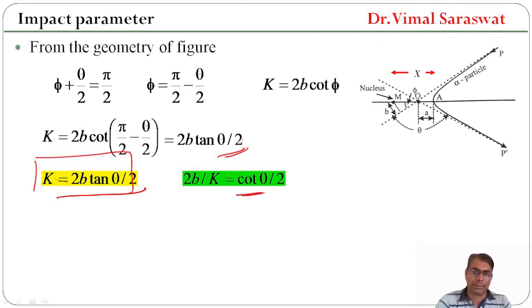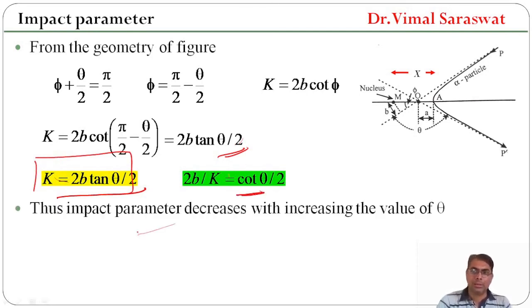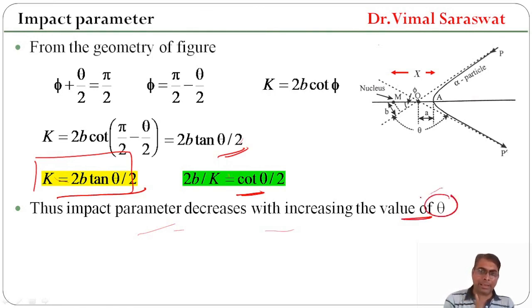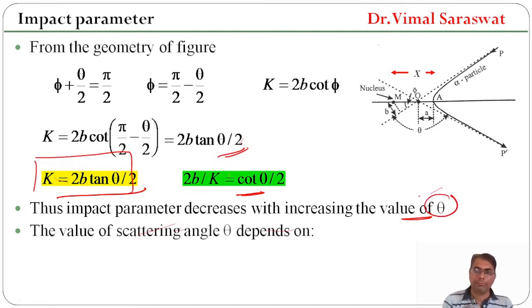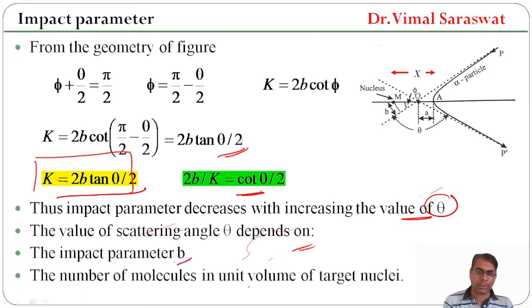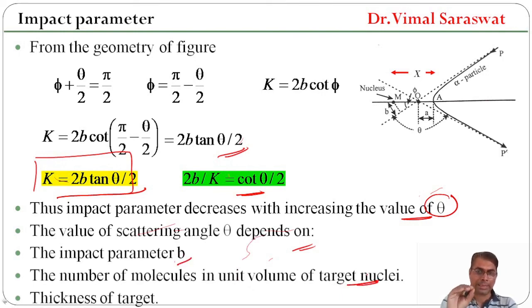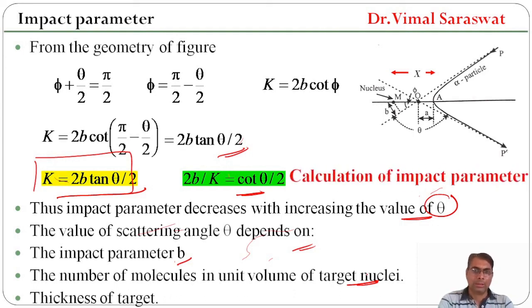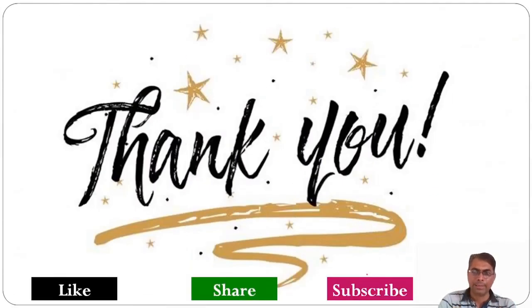Thus, the impact parameter decreases with increasing value of theta. The value of scattering angle theta depends on the impact parameter B, the number of molecules in unit volume of target nuclei, and also on the thickness of target. This completes the calculation of impact parameter. Goodbye.